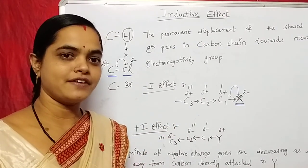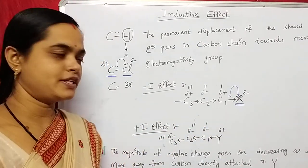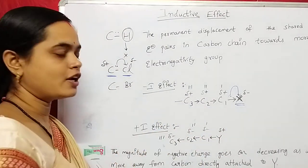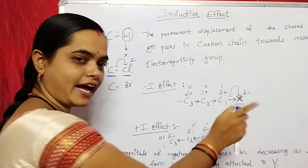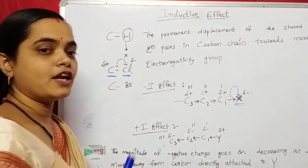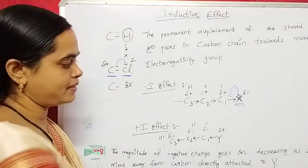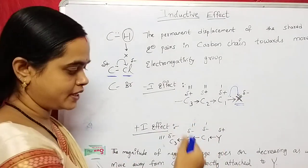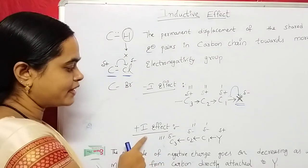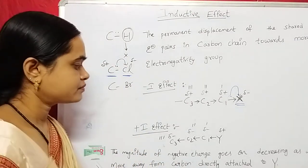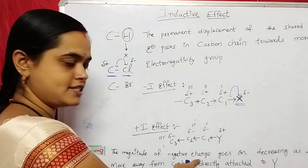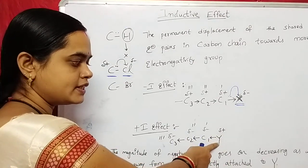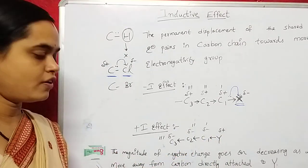What is the minus I effect? If an electron withdrawing group is attached to the carbon chain, then the effect is known as the minus I effect and the electrons move towards the electronegative atom. What is the plus I effect? If electron donating groups — let us take example Y, where Y is an electron donating group — are attached to the carbon chain, the effect is known as the plus I effect. In this, the magnitude of the partial negative charge goes on decreasing as we move away from the carbon directly attached to Y.